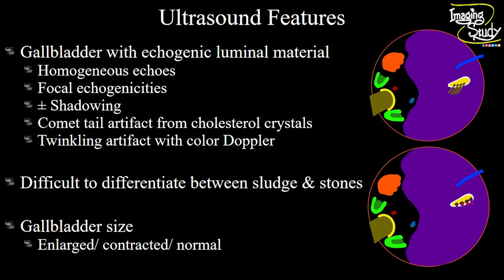It may be a little bit difficult to differentiate between sludge and stones in gestational age. However, if you put the color Doppler and get twinkling artifact, then it's quite confirmatory to say that these echogenic structures are gallstones. The gallbladder size may be normal, contracted, or even enlarged.